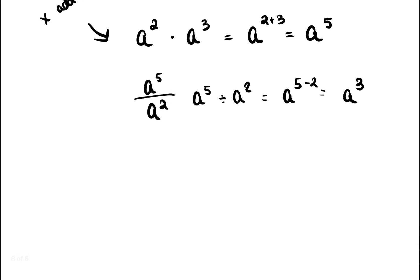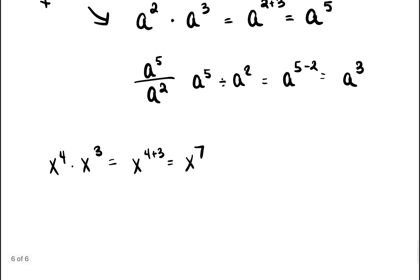Let's do two problems using those rules. First, x to the fourth power times x to the third power. When you multiply, you add the exponents: x to the four plus three, so it'd be x to the seventh power.